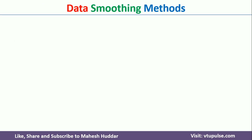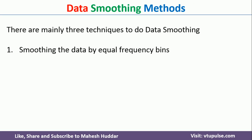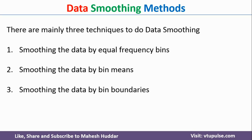Now we will try to see what are the different data smoothing techniques available. There are mainly three data smoothing techniques. The first one is smoothing the data by equal frequency bins. The second one is smoothing the data by bin means. The third one is smoothing the data by bin boundaries. We will discuss each of these techniques one by one with a simple example.